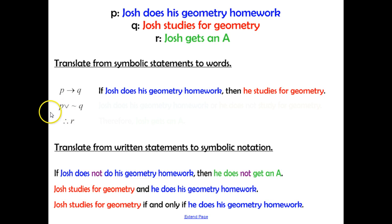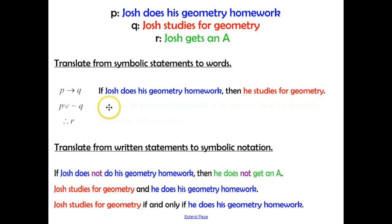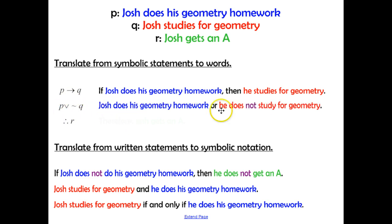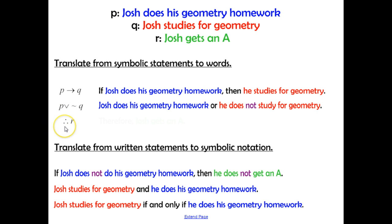Next, P or not Q: we start with P — 'Josh does his geometry homework' — or, then negate Q so it reads 'Josh does not study for geometry.' So: 'Josh does his geometry homework, or he does not study for geometry.' The last one uses three dots meaning therefore, followed by R: 'Therefore, Josh gets an A.'